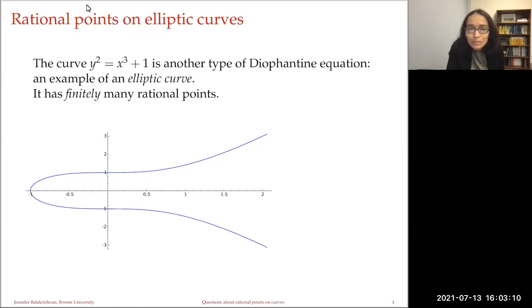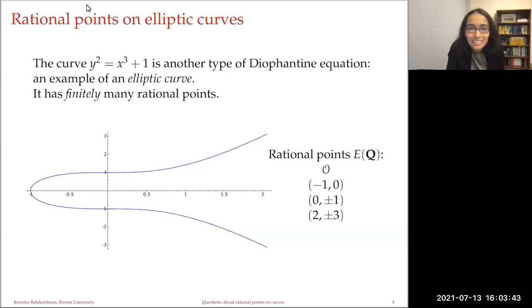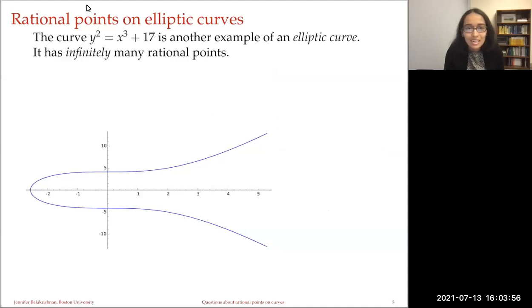Just to give you something to think about, here are the rational points on this elliptic curve. You have a special point — a point at infinity. You should think of the elliptic curve as living in the projective plane, and there's this point at infinity that we need to include to have some nice structure. And then we have the points that maybe you were thinking about as you were looking at the equation. It's remarkable that this is it — this is the complete set of rational points on this curve. Now we can consider a very similar-looking elliptic curve: y squared equals x cubed plus 17. This is another elliptic curve, and over the real numbers it looks very similar to the previous one. Yet it has infinitely many rational points — we can't list them all, but we can list some of them.